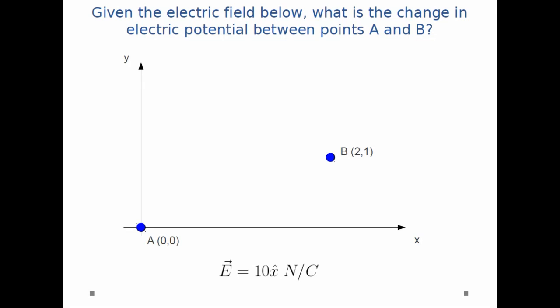I give you a setup in the picture here. I have two points, A and B. A is located at the origin, B is located at 2 comma 1, units are in meters, and I have an electric field given by 10 newtons per coulomb in the x-hat direction.